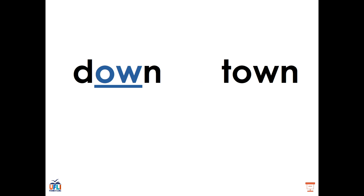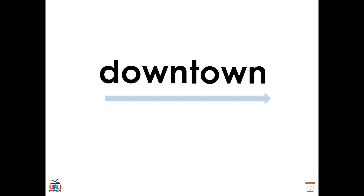Here we have the word DOWNTOWN. Immediately, we notice that this one has two diphthongs in it. We can split it into its syllables — each syllable needs a vowel sound — so we have the syllable DOWN and the syllable TOWN. You might notice that these two syllables actually rhyme. The syllable DOWN has the diphthong OW made by the letters OW in the middle, as does the syllable TOWN. Both syllables have the diphthong OW. DOWN, TOWN come together to make DOWNTOWN.